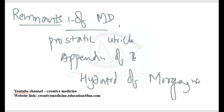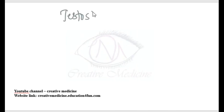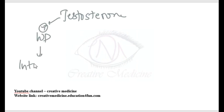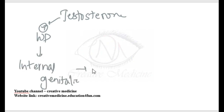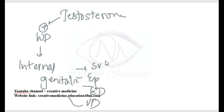Leydig cells produce testosterone, which promotes the development of the Wolffian duct. This Wolffian duct is responsible for the development of internal genitalia in males, including the seminal vesicles, epididymis, and ejaculatory duct. All of these develop from the Wolffian duct.